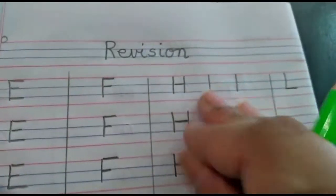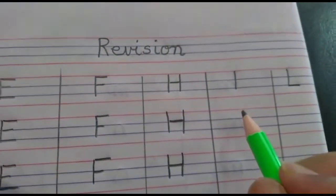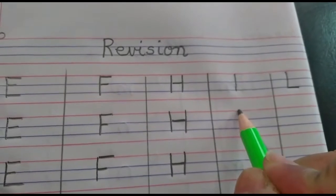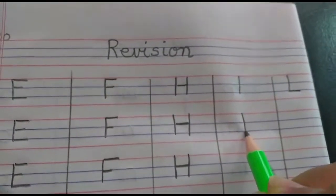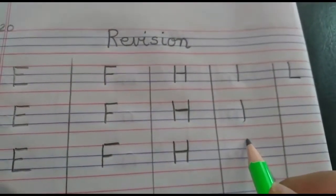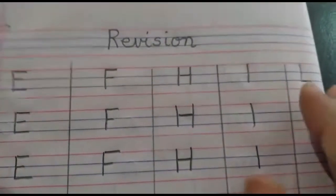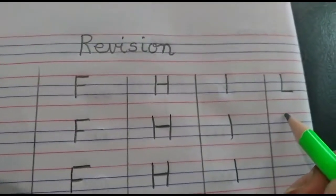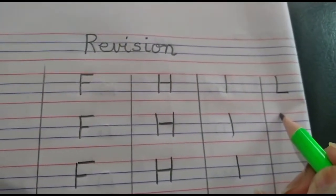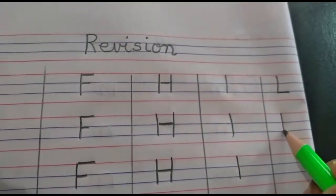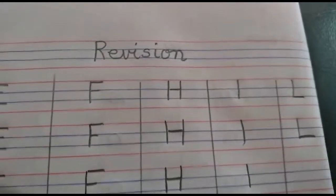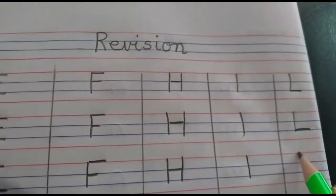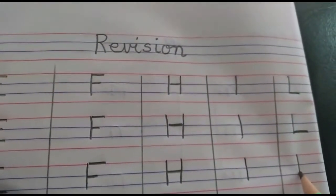Now let's write letter I. We start from red line and go to blue line — one standing line, I. Again, red line to blue line, standing line — I. Now let's write letter L: standing line from red line to blue line, then make a sleeping line — L. Again: standing line, red line to blue line, and make a sleeping line — L.